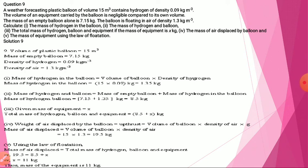Using the law of floatation: mass of hydrogen in the balloon equals volume of balloon multiplied by density of hydrogen — that is 1.35. Next, mass of hydrogen and balloon equals mass of empty balloon plus mass of hydrogen. Mass of empty balloon is given as 7.15, and we found mass of hydrogen as 1.35, so total mass is 8.5. Given that mass of equipment is x, the total mass of hydrogen, balloon, and equipment is 8.5 plus x.